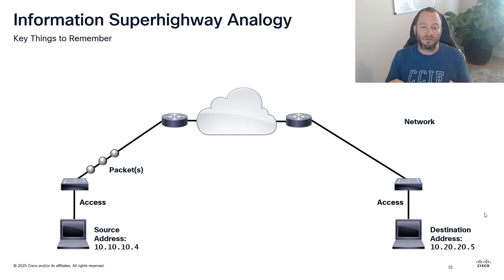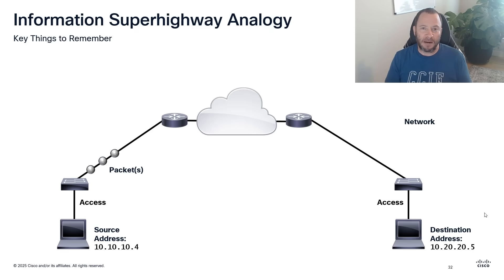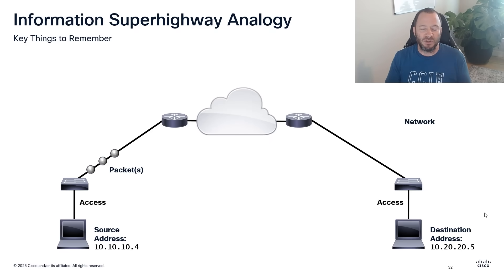You still have these sort of on-ramps, referred to as network access. It's usually copper wire, fiber, or some kind of radio signal using wireless LANs. This is how the internet is built and how networks operate numerous times every day.